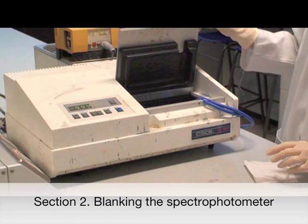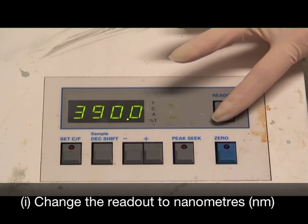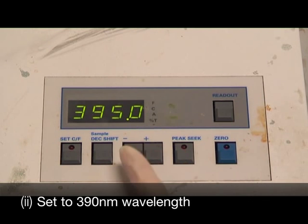Section 2: Blanking the spectrophotometer. Firstly, change the readout to nanometers. This has been abbreviated to nm. Now set the spectrophotometer to 390 nanometers of wavelength.